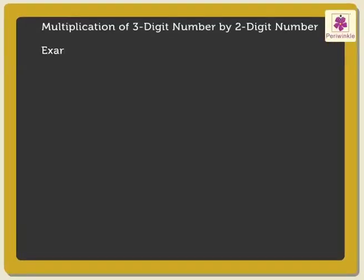Let us find the product of 267 and 25. We can divide the whole process into three steps.